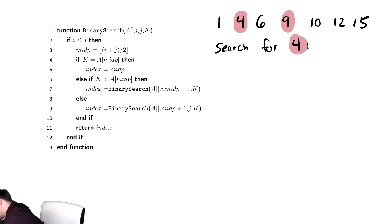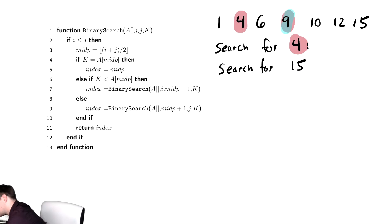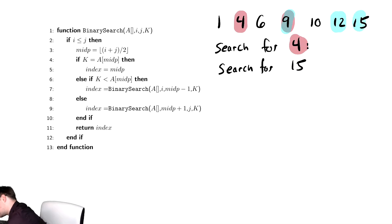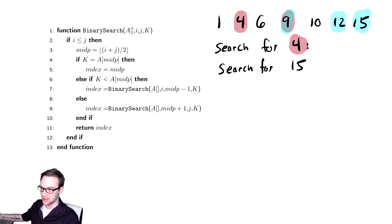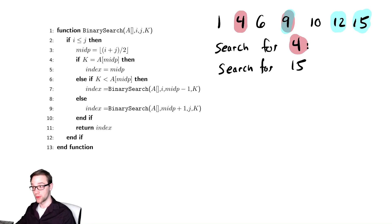Let's say we wanted to search for 15. It starts by searching 9, then looks in the right half because 15 is bigger. It then searches 12, notices 15 is bigger than 12, so it searches 15. This looks very efficient because we're eliminating half of the results every single time. This turns out to be a very, very effective searching algorithm if you're trying to search through a sorted array.